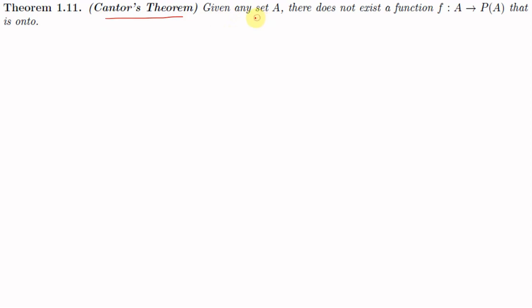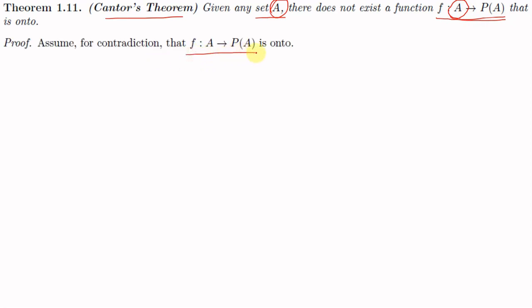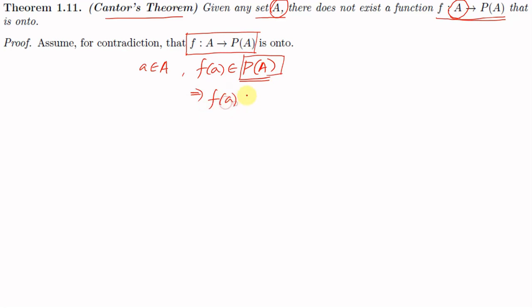We now state Cantor's Theorem: given any set A, there does not exist a function f from A to P(A) that is onto. This means that for any set A, the function f from A to its power set P(A) cannot be onto. To prove this we use the method of contradiction — we assume that the function f from A to P(A) is onto. Since f maps A to P(A), for any a in A, f(a) is an element of P(A), meaning f(a) is a subset of A.